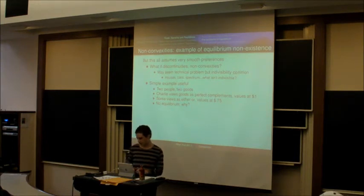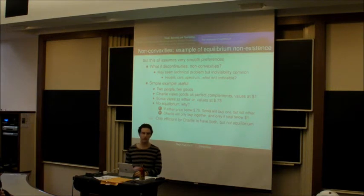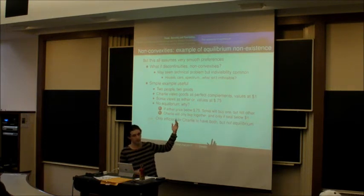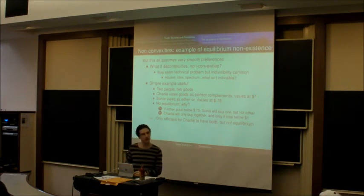Does that make sense to me at all? Okay. Now, yeah, so if either price is below 75 cents, Sonya will buy one, but not the other. And Charlie will only buy them together, and only if the total value is below a dollar. And the efficient thing is for Charlie to have both of them, right, because the maximum utility Sonya can get is 75 cents. Charlie can get a utility of a dollar, so it's more efficient for him to have both of the goods. But that's not an equilibrium, because any time he's willing to buy both of the goods, Sonya's willing to buy one of them, right?